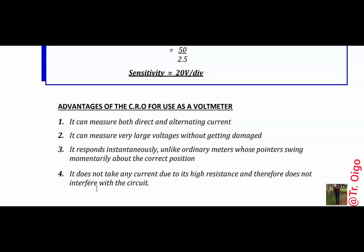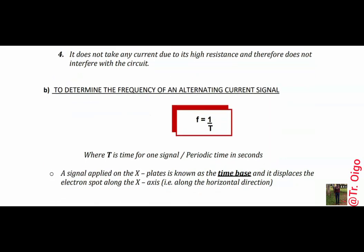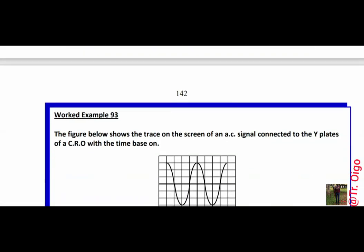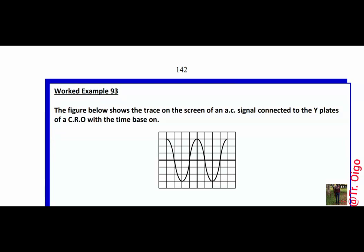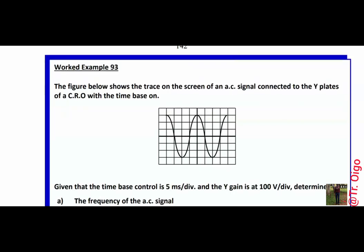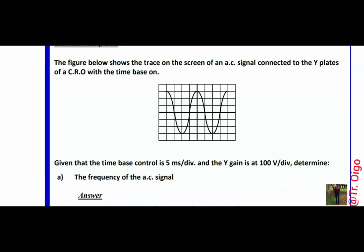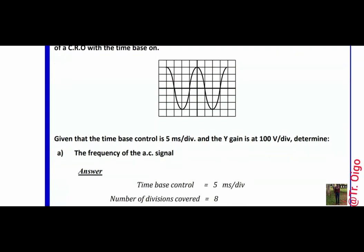We can also use this CRO to determine the frequency of an alternating current signal using the formula F equals one over T. For example, the figure shows the trace of an AC signal on the screen with the time base at 5 milliseconds per division and the Y gain at 100 volts per division. To find the frequency, we count the number of divisions for one complete wave. Counting from where the wave starts to where it completes one full cycle gives us 4 divisions.